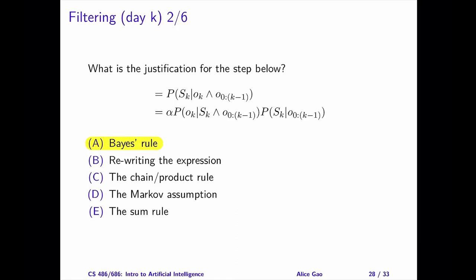The correct answer is A, Bayes rule. It's easier to see this when you cross out O sub 0 to k-1 since it appears in all three terms. We effectively switch the places of S sub k and O sub k using Bayes rule.